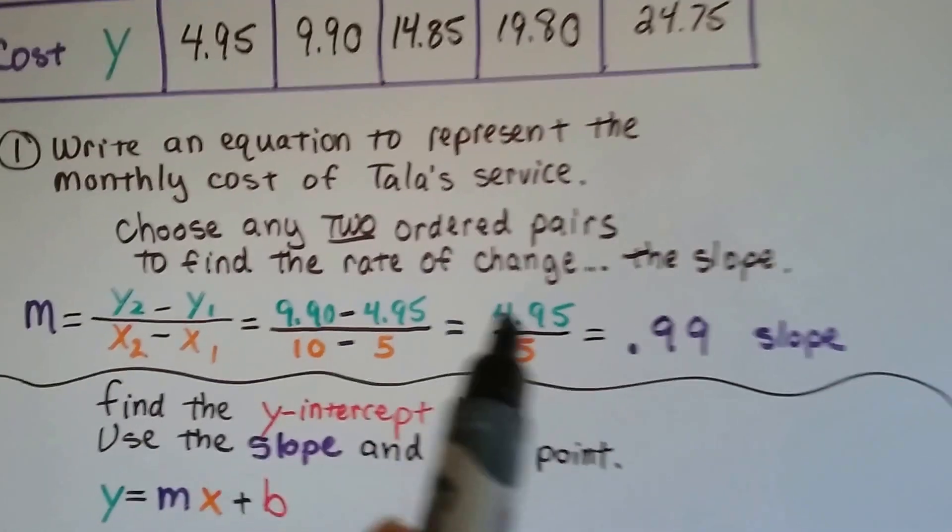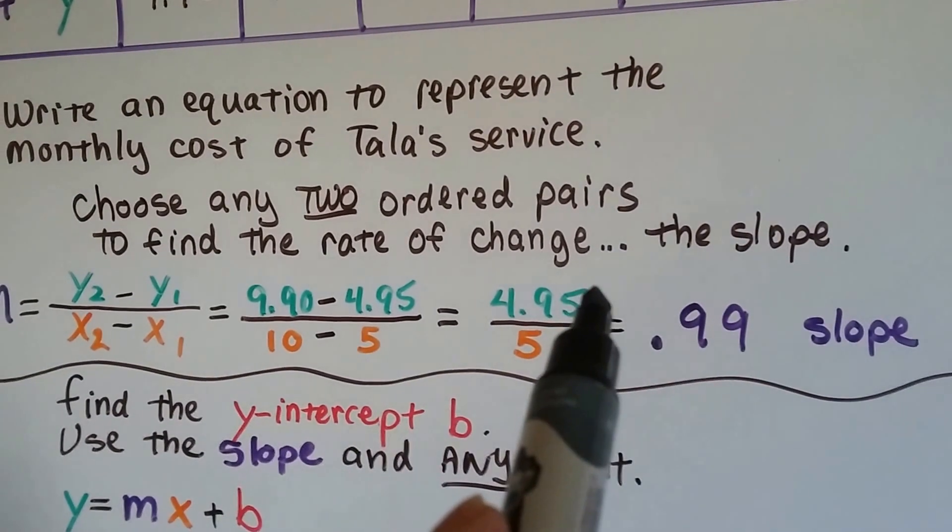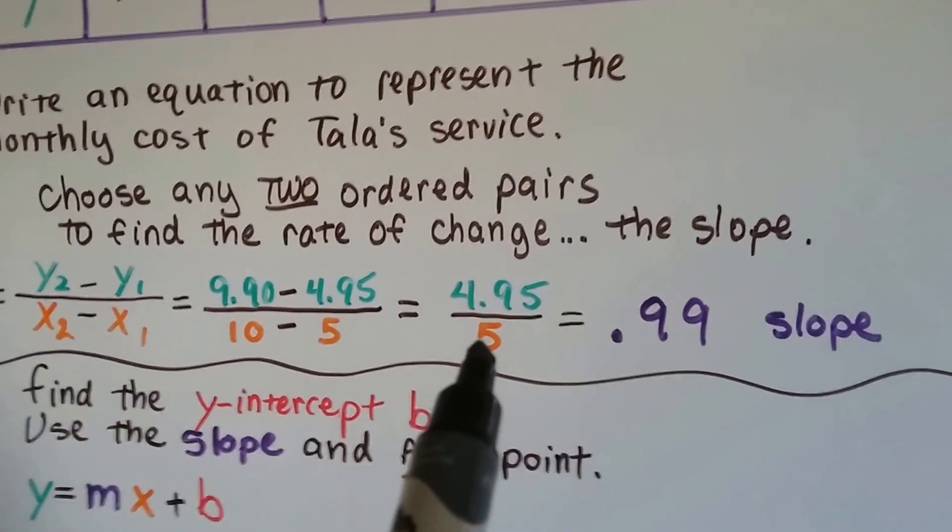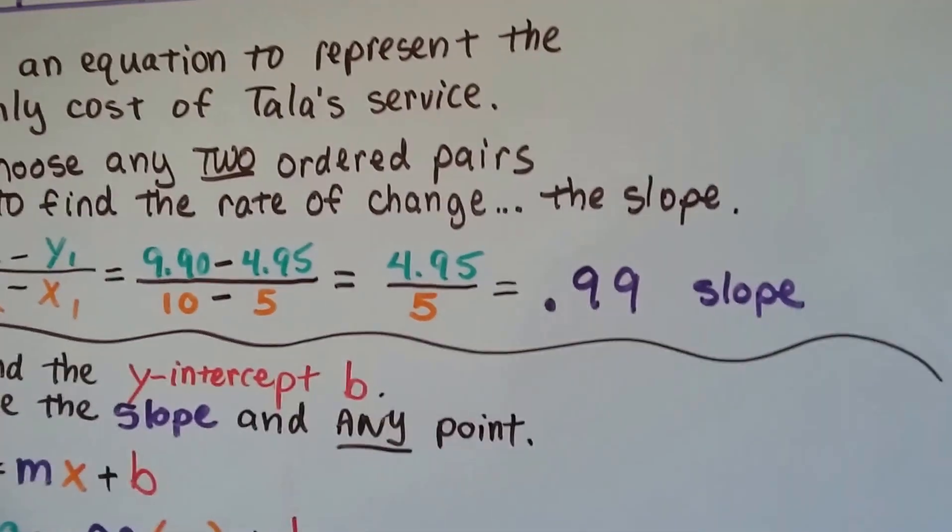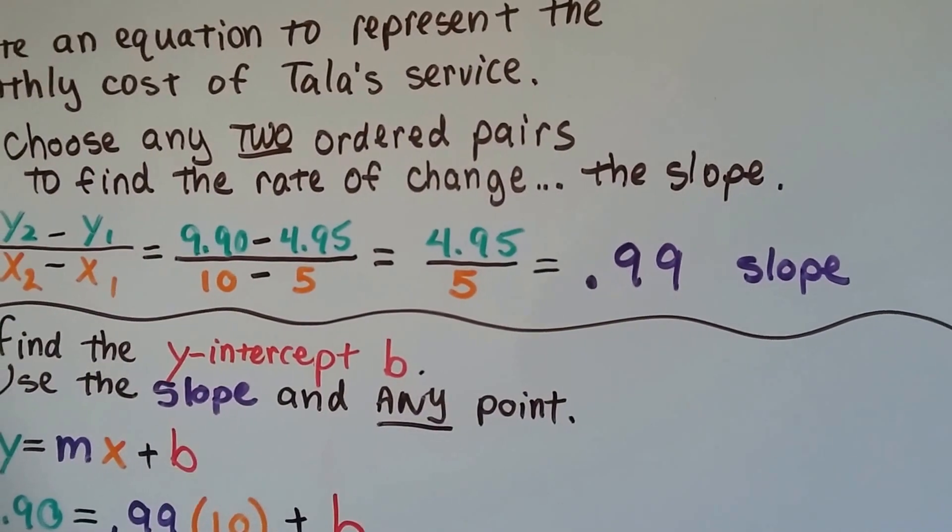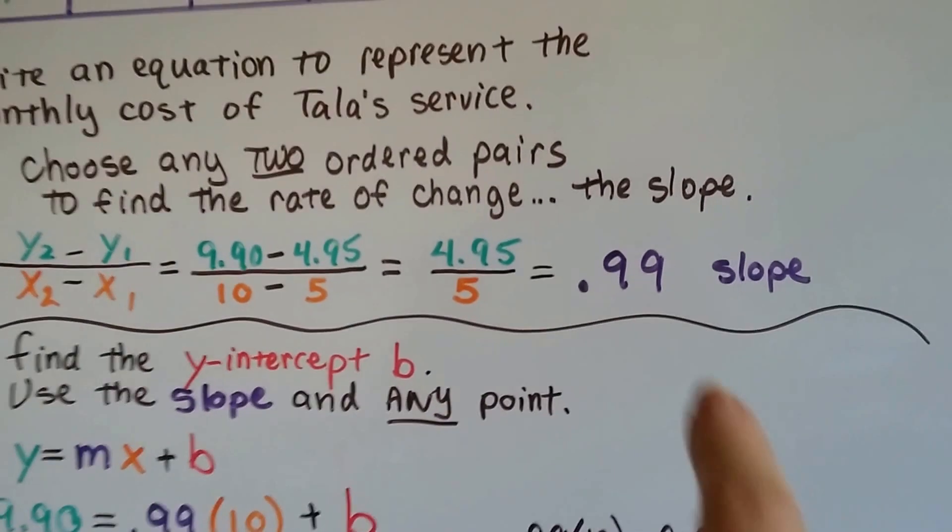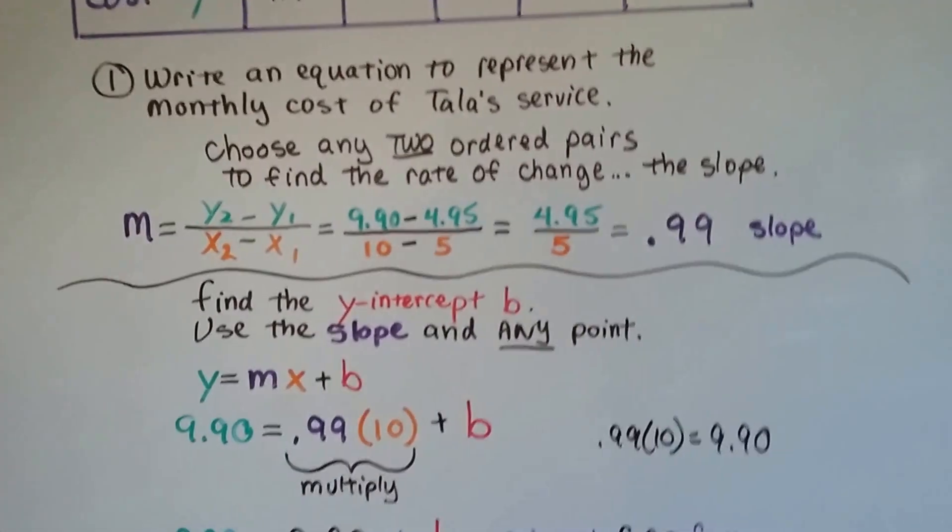We do our subtraction, and we get 4.95, 4 dollars and 95 cents, over 5. When we simplify this, we come up with .99 as the slope. So that's going to be our slope that we're going to use for our equation.